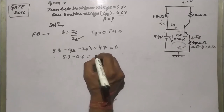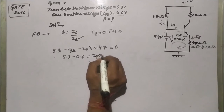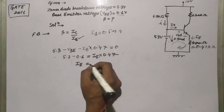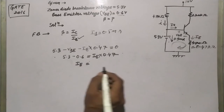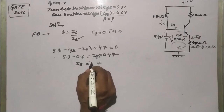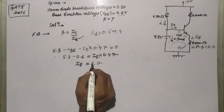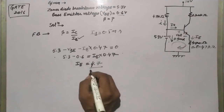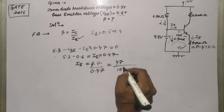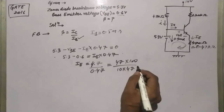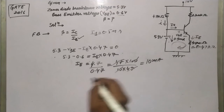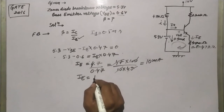So we get 5.3 minus 0.6 equals IE times 0.47. IE equals 4.7 divided by 0.47, which gives 10 milliamperes. So IE is equal to 10 milliamperes.